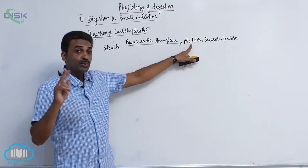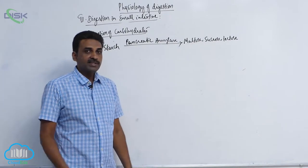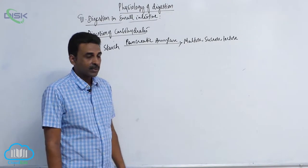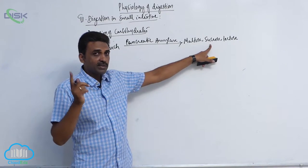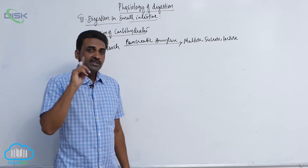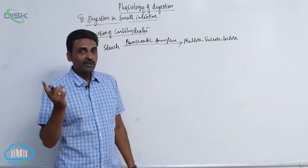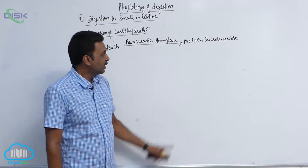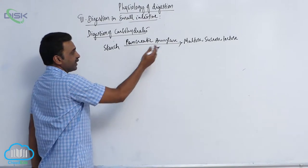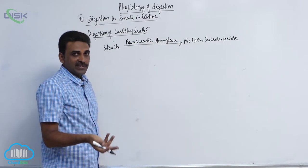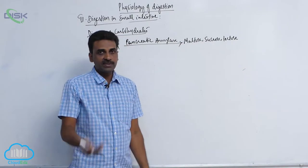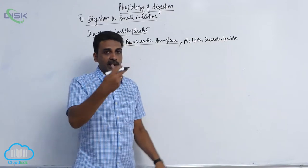Maltose contains two units of glucose. Sucrose contains one unit of glucose and one unit of fructose. Lactose contains one unit of glucose and one unit of galactose. All these are disaccharides.